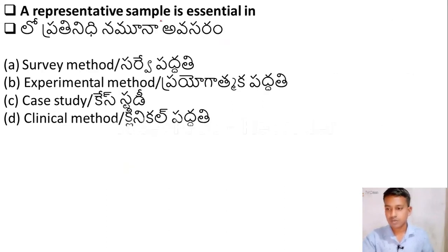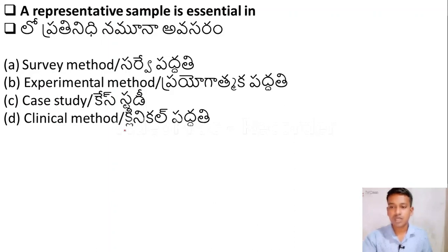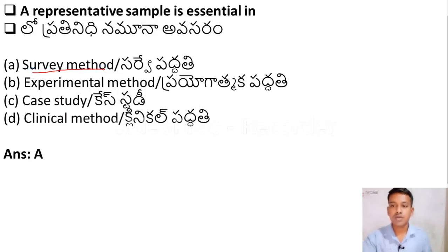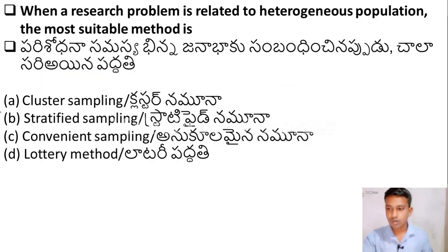The next question: a representative sample is essential in — Option A: Survey method, Option B: Experimental method, Option C: Case study, Option D: Clinical method. The right answer is Option A — survey method. A representative sample is essential in the survey method.